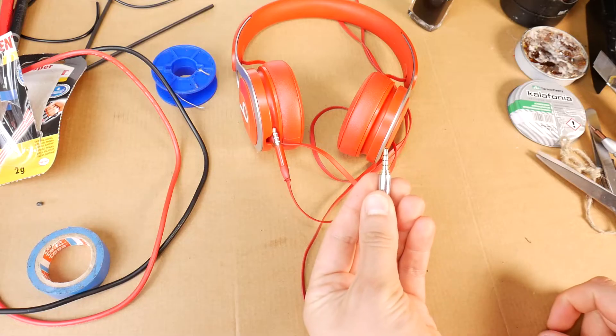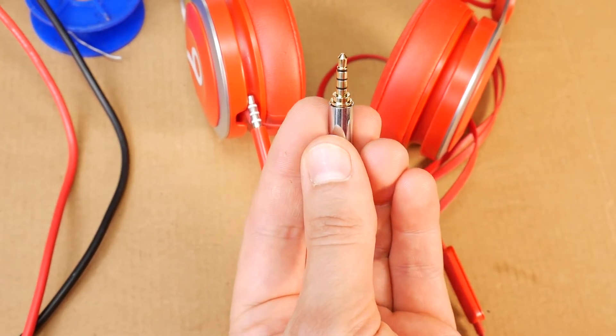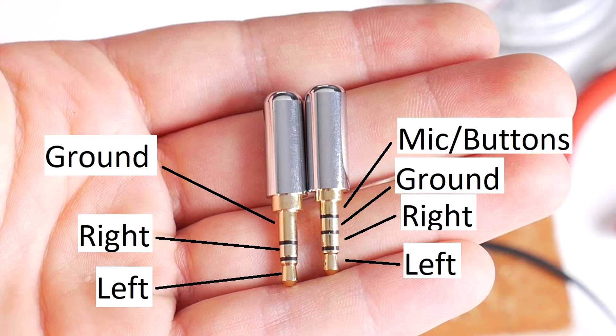To do this repair, you have to buy a new replacement 3.5mm 4-pole jack. If you don't need a working microphone and buttons, then you can also use a 3.5mm 3-pole jack. Either way, your music will sound like new.